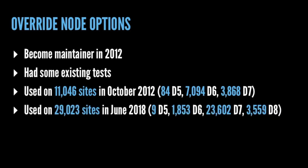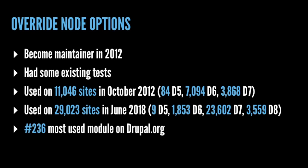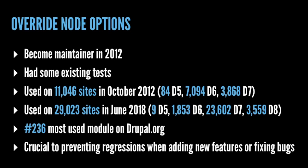As of last month, the Override Node Options module is currently used on almost 30,000 websites — still some Drupal 5 and 6 sites according to the update module, but also a lot more Drupal 7 and Drupal 8 sites now. Writing and extending tests for this module prevented regressions when I was adding new functionality, in my own code and in patches coming in from the issue queue. I'm pretty sure this was the first module I ported to Drupal 8, aided by and driven by the tests I already had in Drupal 7. This is why I started getting interested in testing — I don't want to be responsible for breaking 22,000 websites, and I don't want clients ringing me up saying their website doesn't work.